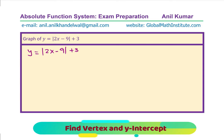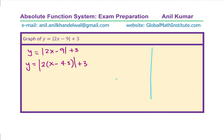The vertex of this equation will be when 2x minus 9 becomes 0. That would be the vertex, so we can write this as x equals 9 divided by 2, which is 4.5. We can now sketch the graph with the vertex at x equals 4.5 and y value of 3. So the vertex is at the point (4.5, 3).